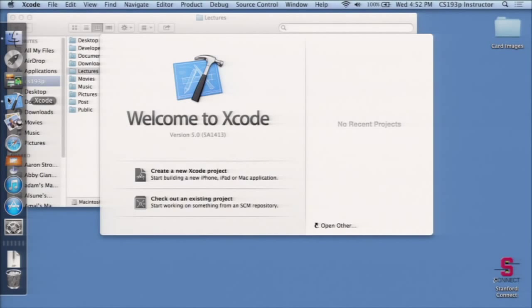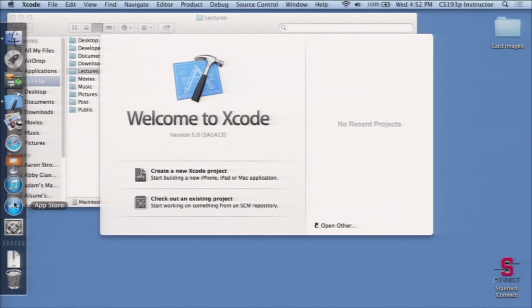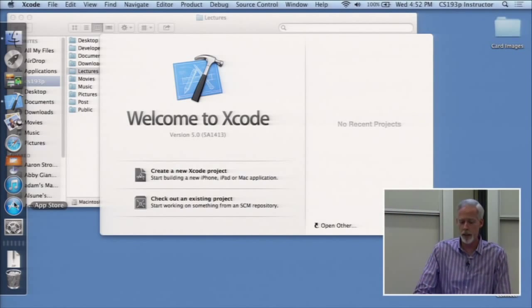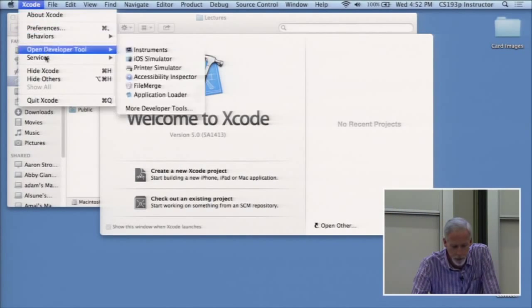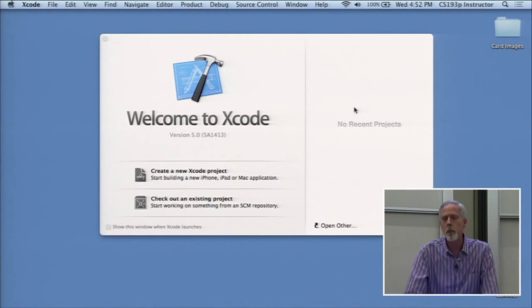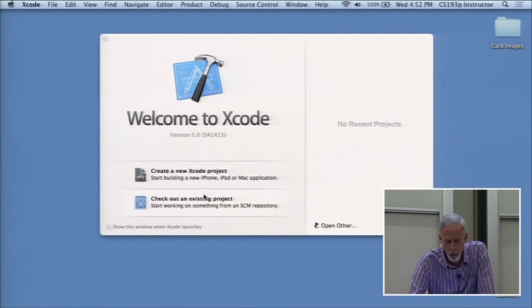So Xcode you get by running, going to your Mac App Store, that's this thing down here. The App Store on your Mac, and you just search for Xcode and find it, it's free, you download it, and you run it. It's as simple as that. This is what it's going to look like when you first bring it up, the splash screen here. As the quarter goes on, this will fill up with all the projects that you're doing. You're probably used to that if you know Xcode.